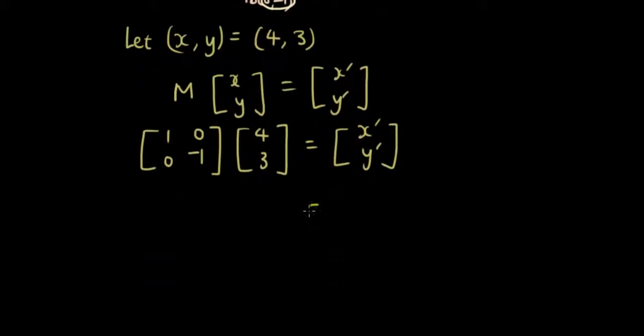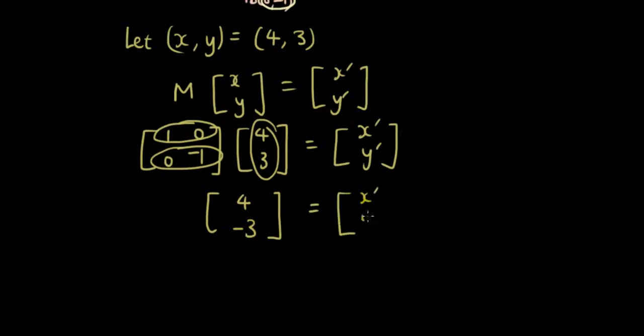So then we get 1 times 4 plus 0 times 3 is 4. So I just went first row times first column, and the answer is 4. And then I go 0 times 4 plus negative 1 times 3, so that's negative 3. And that is equal to x dash, y dash.